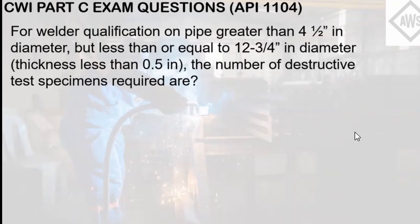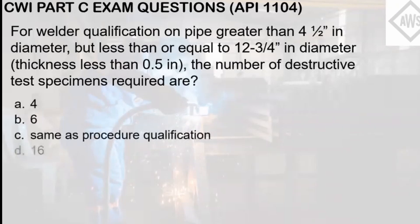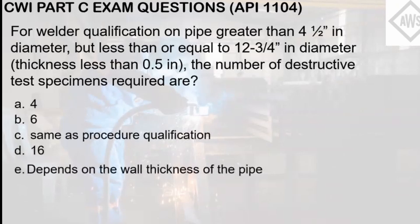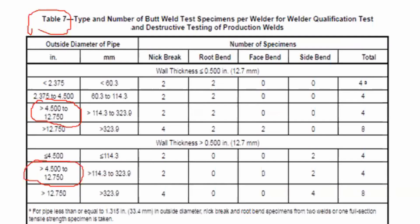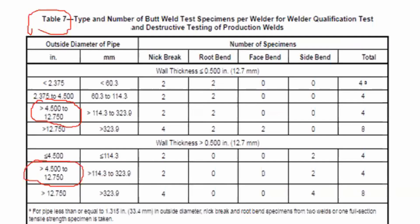For welder qualification on pipe greater than 4.5 inch in diameter but less than or equal to 12.75 inch diameter, with wall thickness less than 0.5 inch, the number of destructive test specimens required — in Part C of the exam, it is important to mark with stickies all the tables and standards so you can easily locate them. This question asks for the number of destructive tests needed for the welder qualification test.